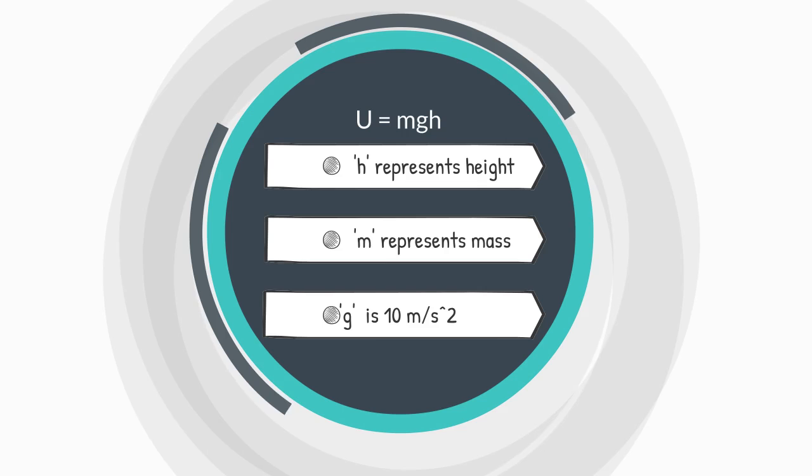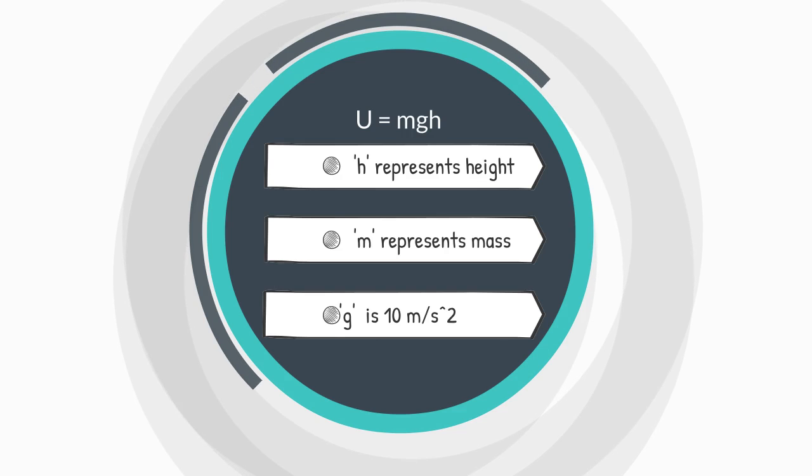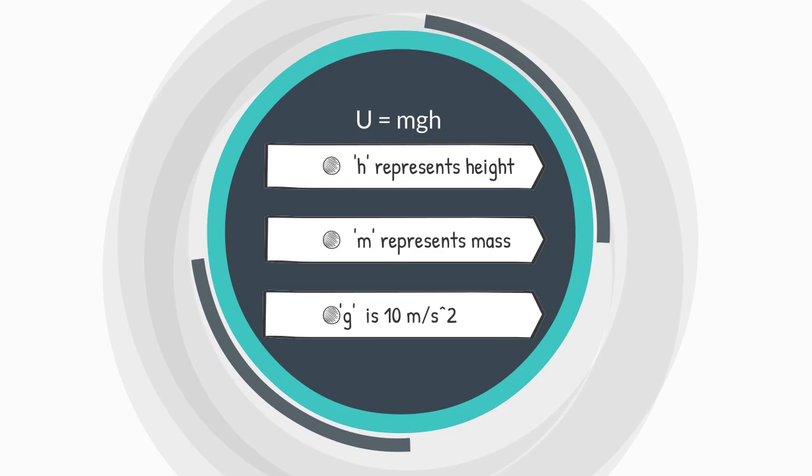And h represents the height. M stands for mass in kilograms. And g stands for the gravitational acceleration, which happens to equal 10 meters per second squared.